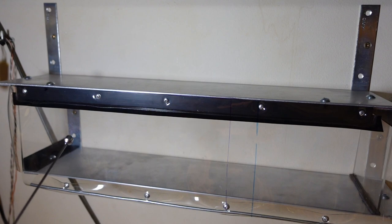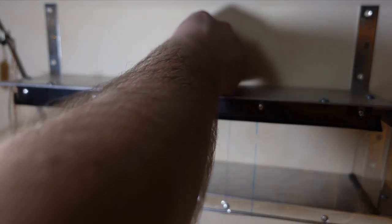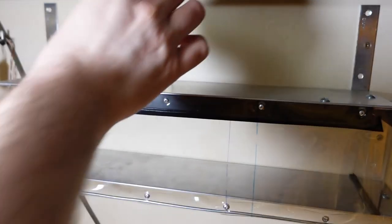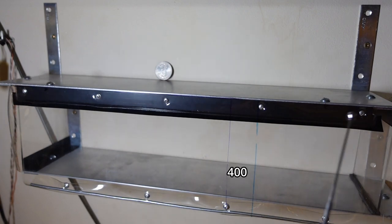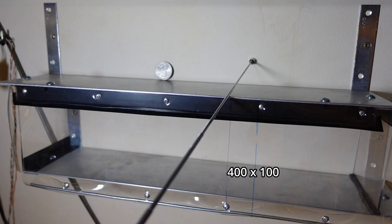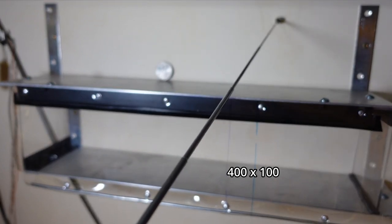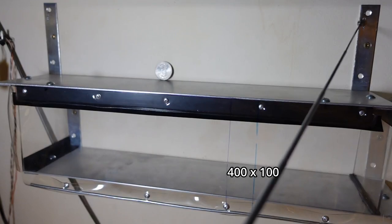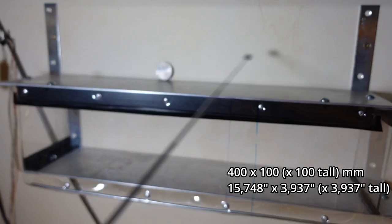As for these ones, dimensions, because scale is a thing. Let me grab my trusty quarter dollar, the best thing for scale ever, better than a banana for sure. The width is about 40 centimeters, the depth is about 10 centimeters, and the height, these are 10 centimeters tall.